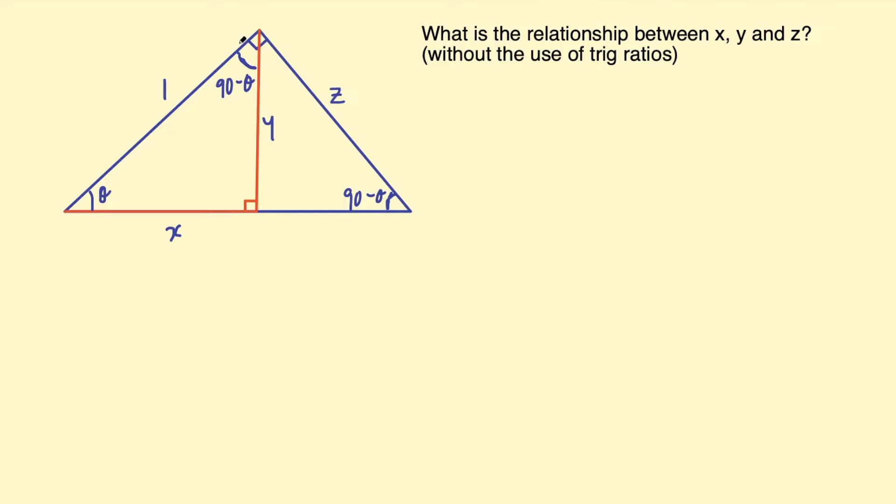So all of the angles in these two right angle triangles are the same, so therefore we have similar triangles. Let's firstly write that down: similar triangles, because all of the angles are the same, and we abbreviate that to AAA.